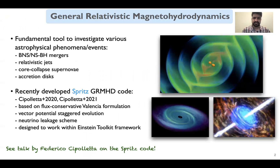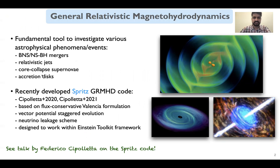General relativistic magnetohydrodynamic simulations provide the essential framework in order to investigate various astrophysical mechanisms involved in compact binary mergers, relativistic jets, core collapse supernovae, accretion disk systems, and other such events. In order to perform such simulations, recently we introduced a new GRMHD code called Spritz, which also now includes a neutrino leakage scheme.